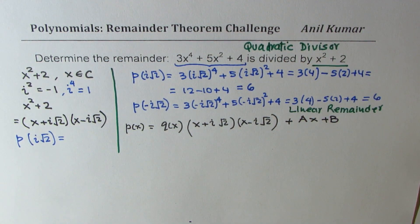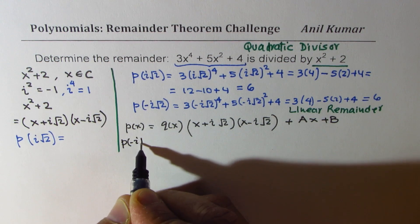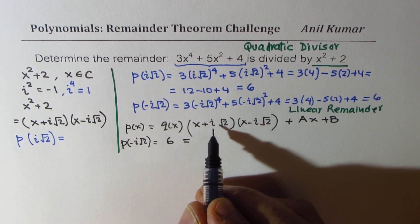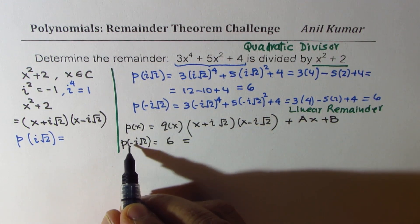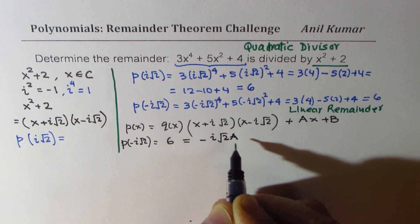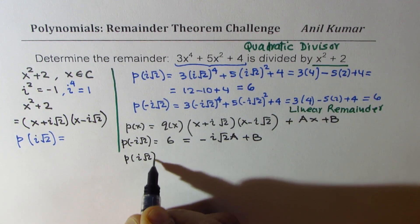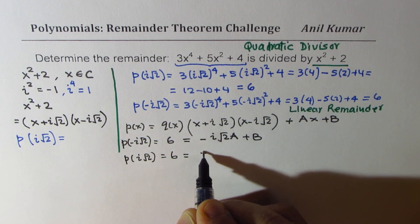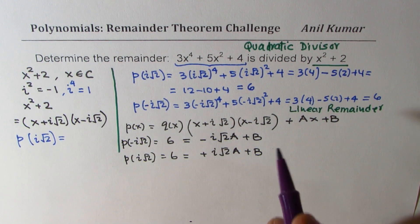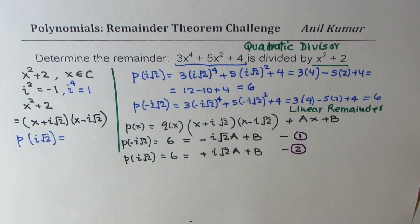If I substitute minus i√2 into the division statement, the divisor factor becomes 0, so I get the polynomial value of 6 equals minus i√2 times A plus B. If I substitute plus i√2, I again get 6, but here I get plus i√2 times A plus B. So I have two equations to solve for two unknowns, A and B — and yes, I can solve it.